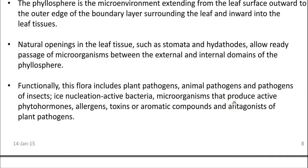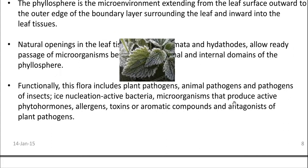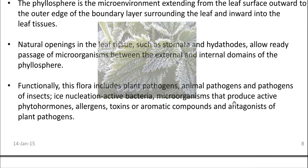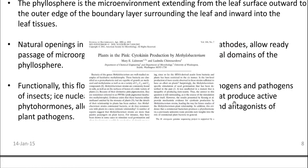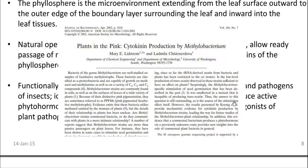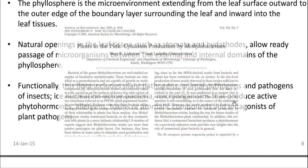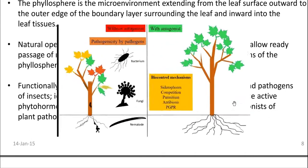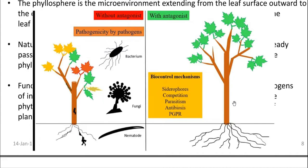If you look at the microflora, functionally they include plant pathogens, animal pathogens, and pathogens of insects; ice nucleation active bacteria; microorganisms that produce active phytohormones — a classical example is Methylobacterium that produces cytokinin; allergen producing microorganisms; toxin and aromatic compounds degrading microorganisms; and antagonists for plant pathogens that can kill the plant pathogen.